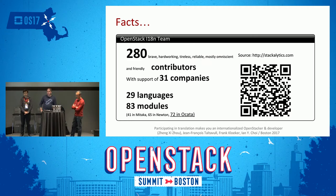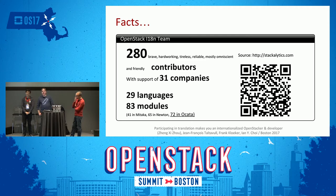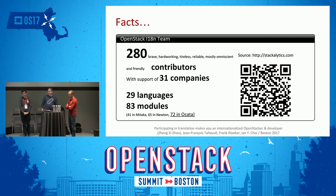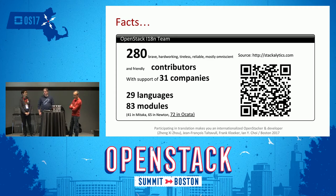Some facts from our team: at the moment we are 280 brave, hardworking, tireless, reliable, mostly omniscient and friendly contributors with support from 31 companies. We have set up for 29 languages in 80 to 30 modules. In the Mitaka cycle we had 41 modules, in Newton 65, in Ocata 72. You can find this statistics and metrics on stackalytics.com.